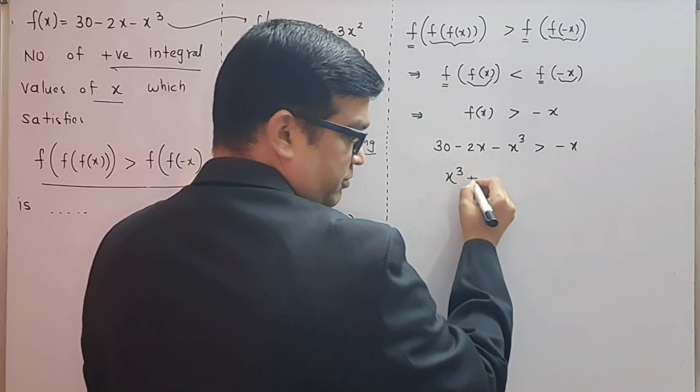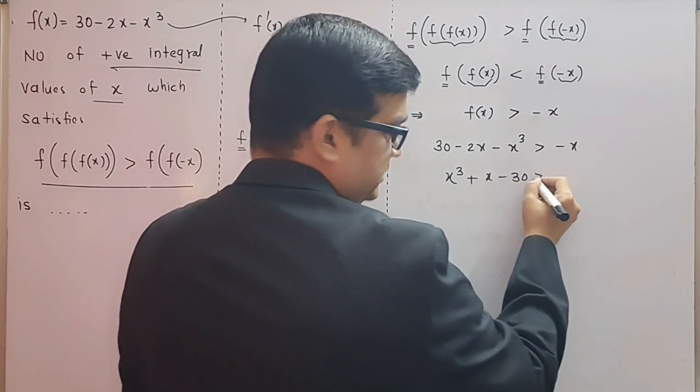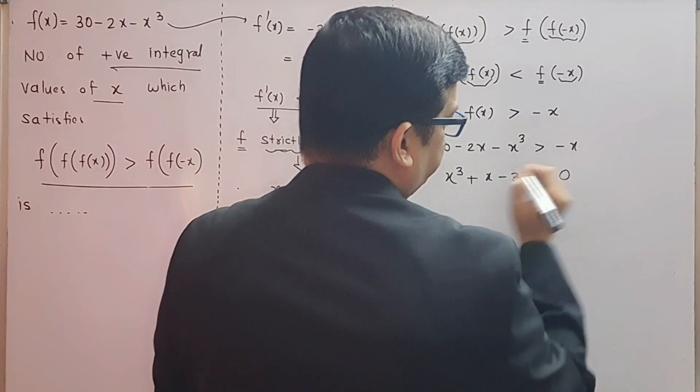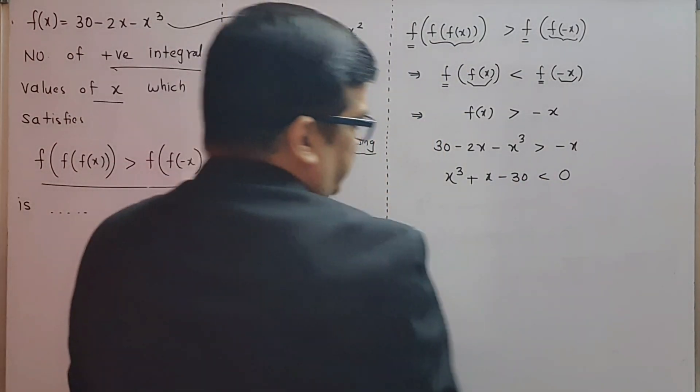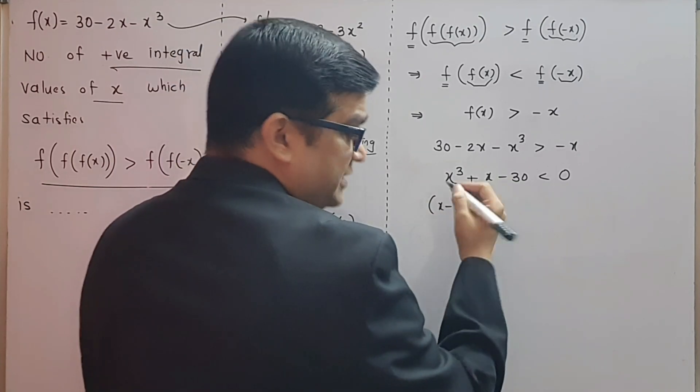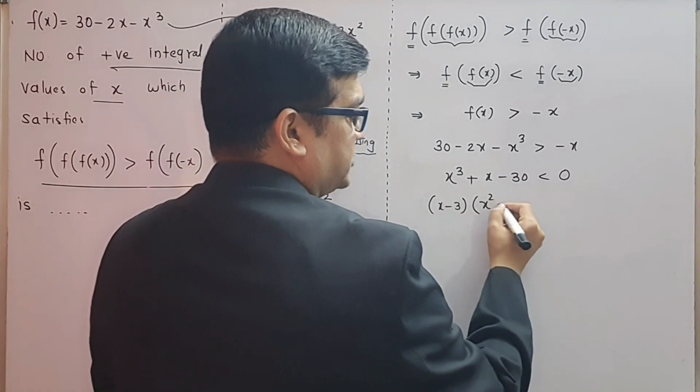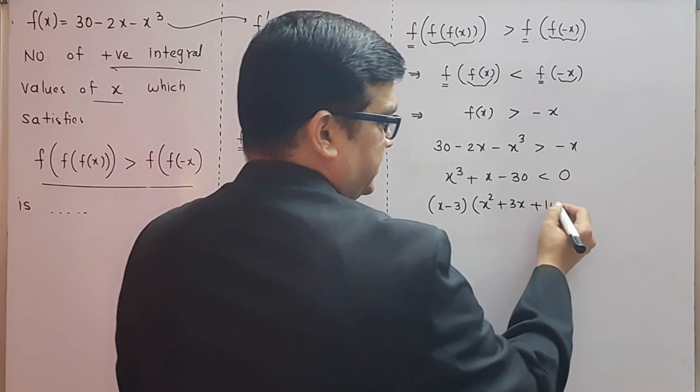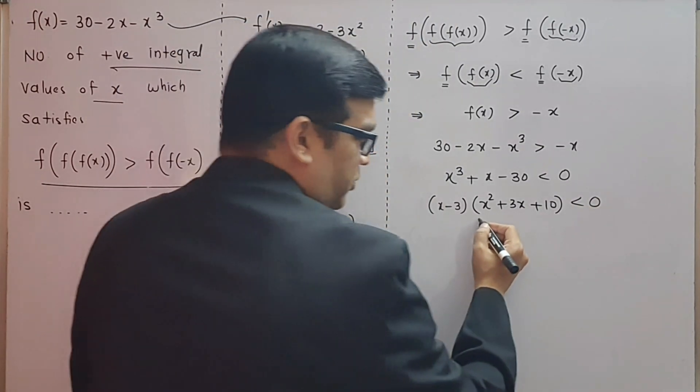Let us rearrange it. We are going to get x³ + x - 30 less than zero. Now we can factorize this using trial and hit method. One of the factors is (x - 3), and inside that we are going to get x² + 3x + 10 less than zero.